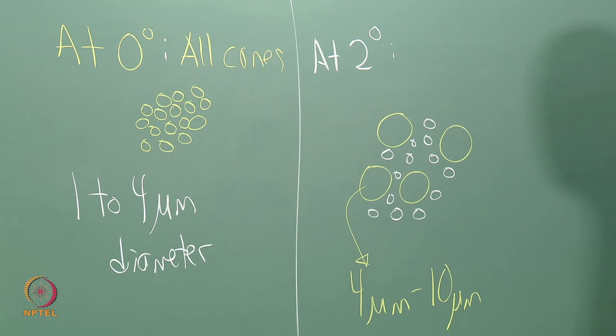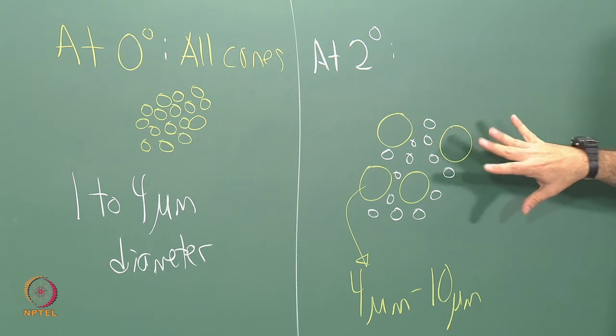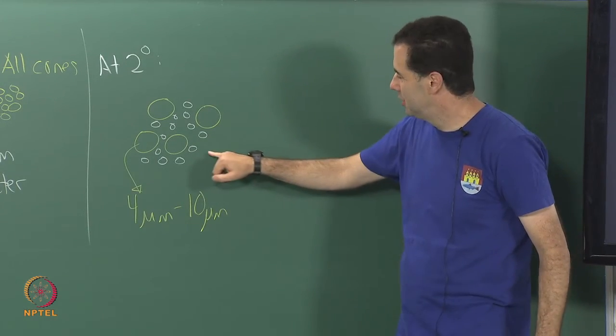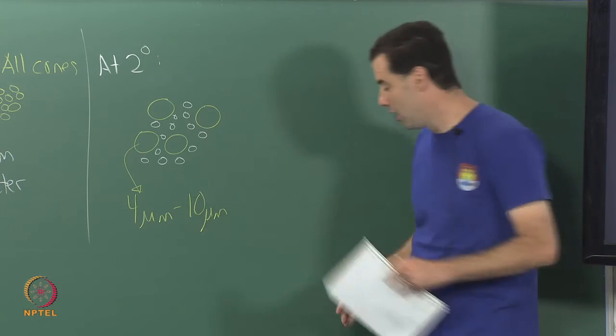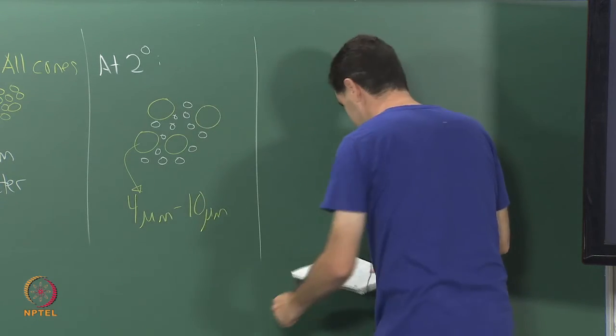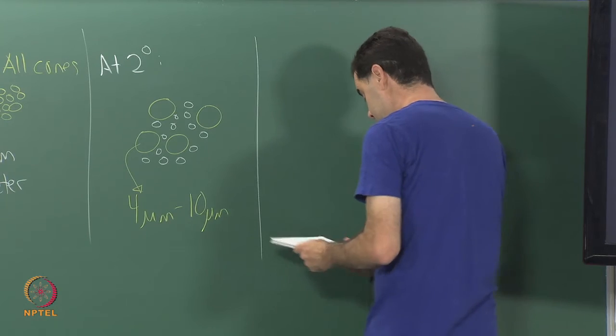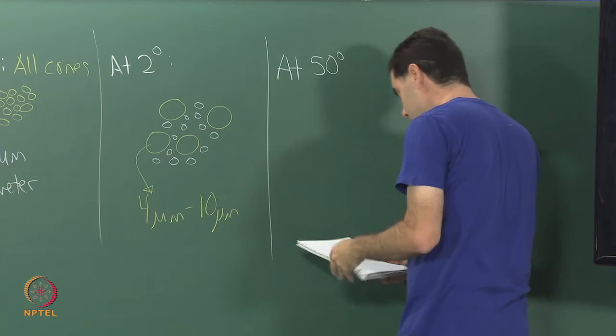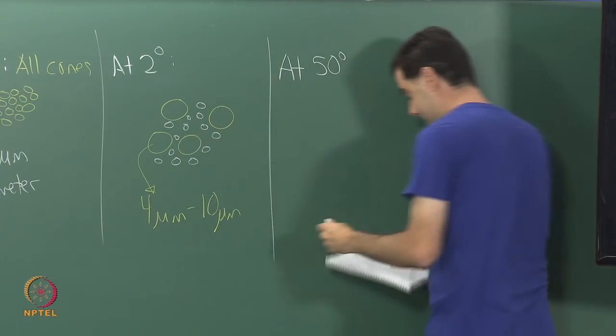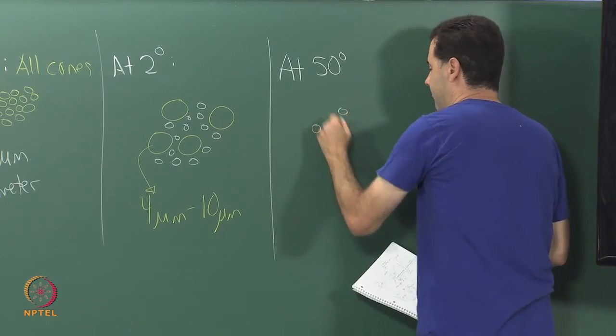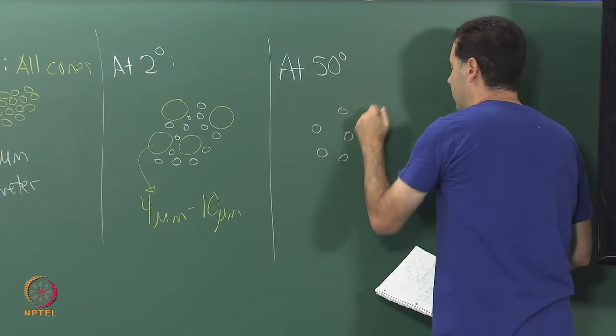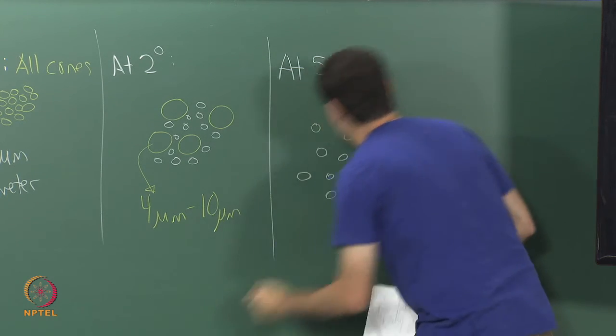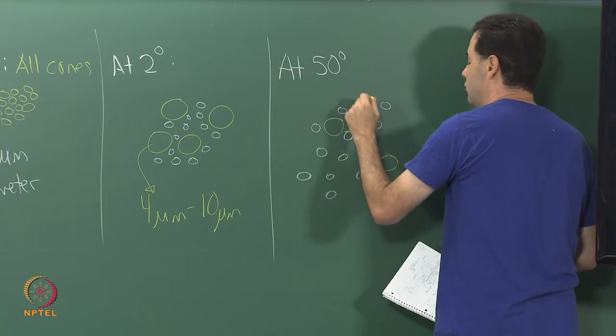By the time we get all the way over to 50 degrees, it is almost entirely rods, a few, a couple of cones in there.